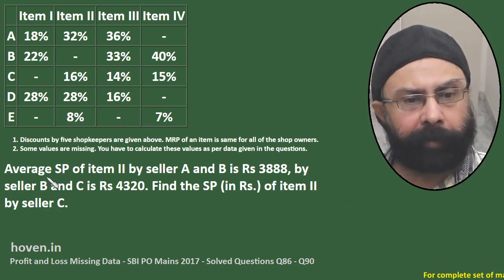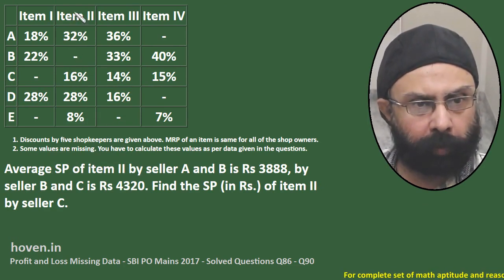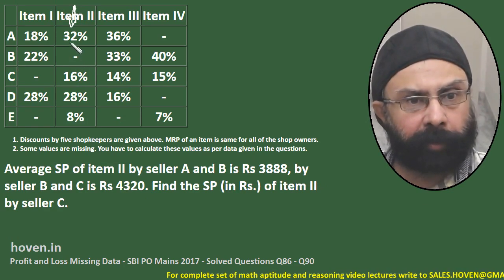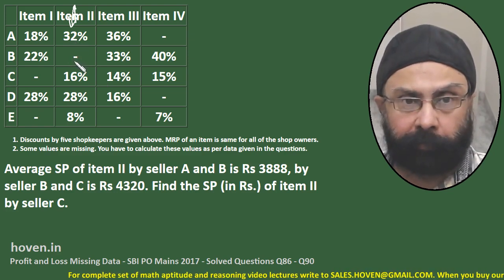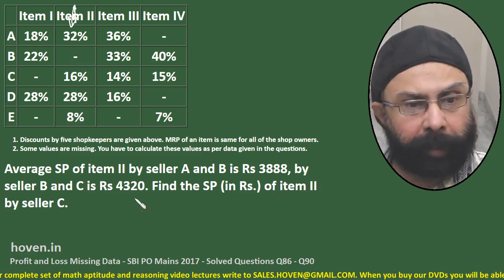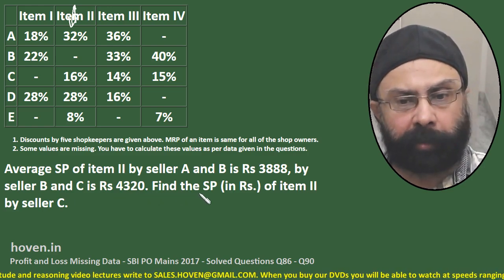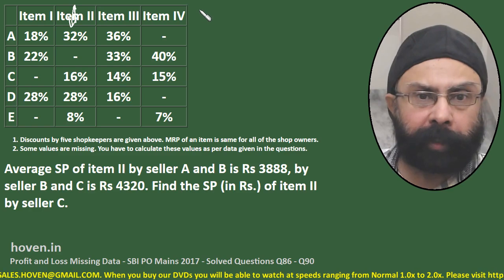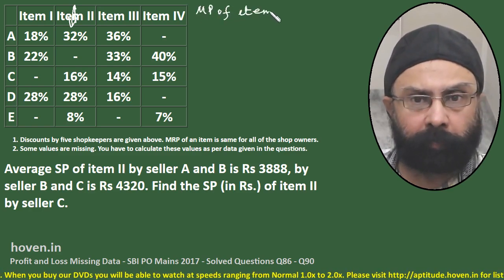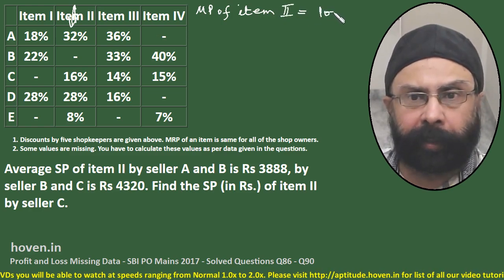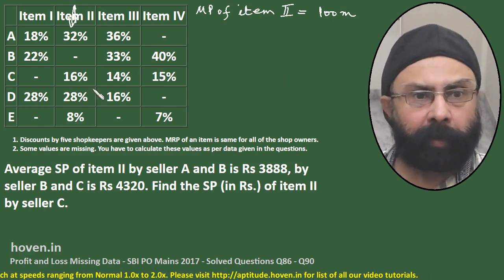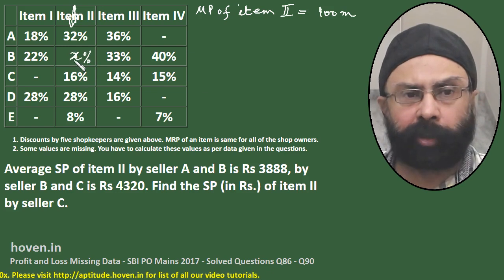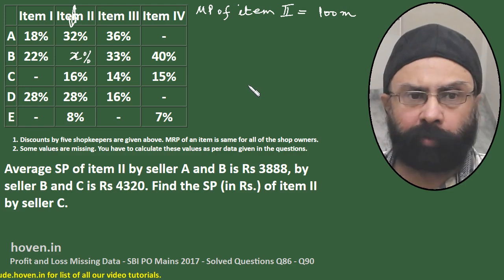The same data is there. The average selling price of item 2 by seller A and seller B is Rs 3888. Discount in the case of seller A is known, but not in the case of seller B — we might expect some problem here. And the average sale price by seller B and C is another figure. We need to find the sale price of item 2 by seller C. Let the marked price of item 2 be 100m, and the unknown discount for seller B be x percent.